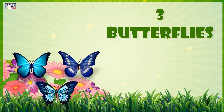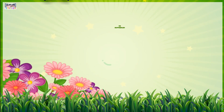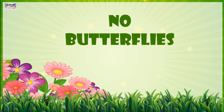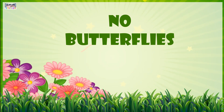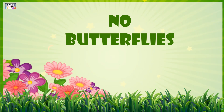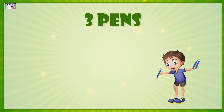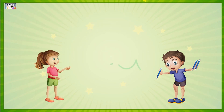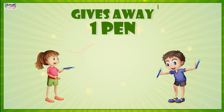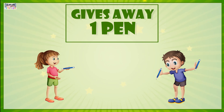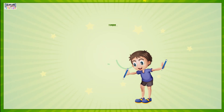If all 3 butterflies flew away, then we have only the flower left and no butterfly. Aman has 3 pens. If he gives away 1 pen to Ashi, now he has 2 pens with him.